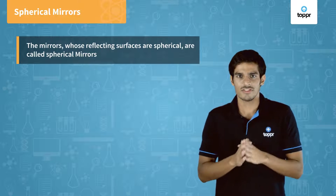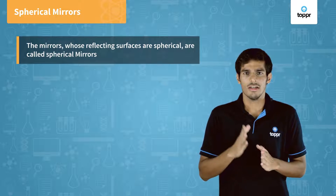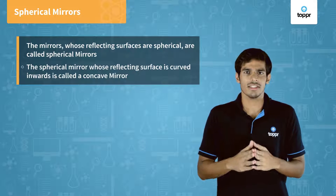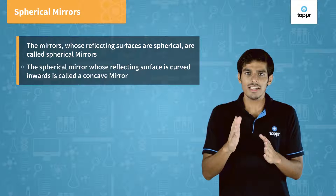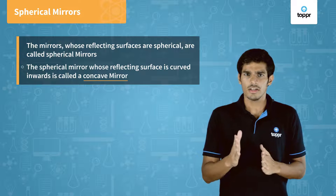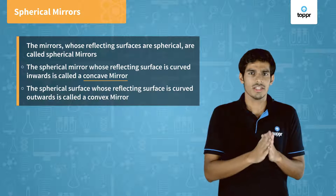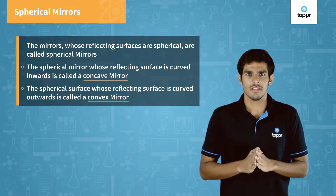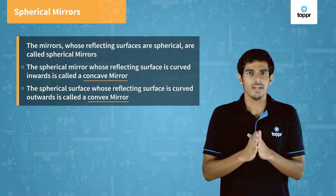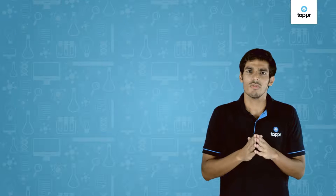The reflecting surfaces of spherical mirrors are a part of a sphere. Mirrors whose reflecting surface is spherical are called spherical mirrors. The reflecting surface of the mirrors can be curved inwards or outwards. If the reflecting surface is curved inwards — that is, the reflecting surface points towards the center — it is called a concave mirror. If the reflecting surface is curved outwards — that is, it points away from the center — it is called a convex mirror. In the activity we performed, the surface of the spoon bulging inwards can be approximated to a concave mirror, and the surface bulging outwards can be approximated as a convex mirror.